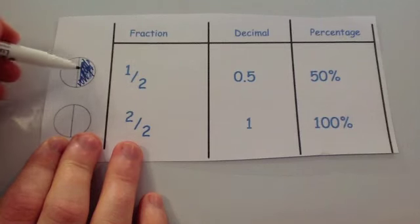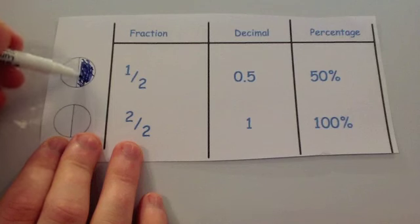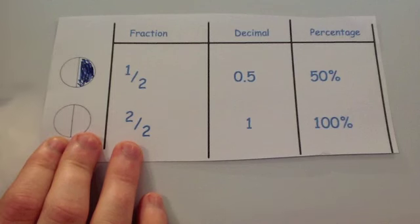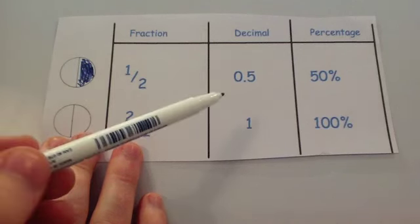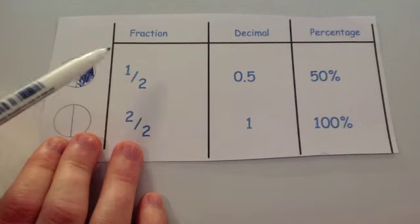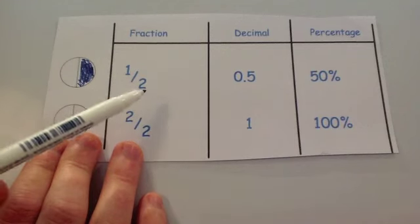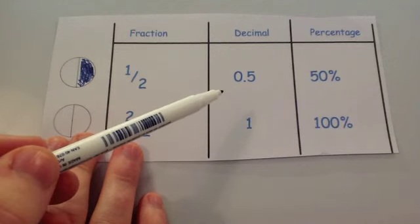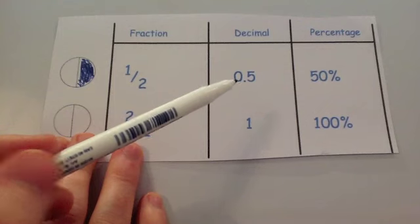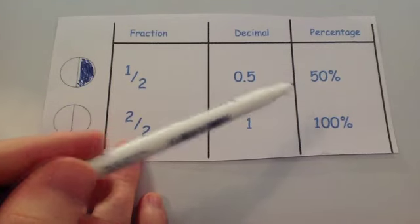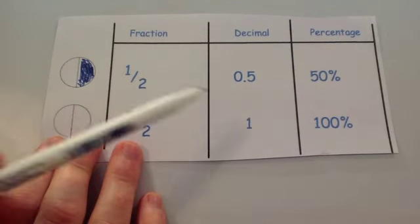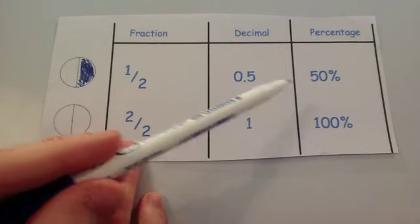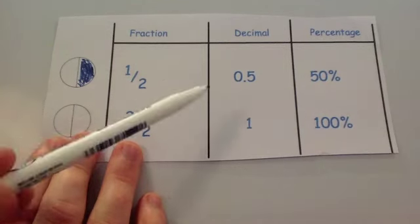If you're asked to shade in half of a shape, it would look like that. A half is the same as 0.5 — if you do one divided by two you get 0.5 — and that is the same as 50%. So if you ever see a half, you can think of it as 0.5 or 50%. These are all equivalent to each other.